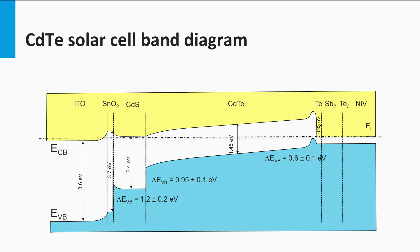Here we see the band diagram of a cadmium telluride solar cell. The P-type semiconductor cadmium telluride has a bandgap of 1.45 eV, whereas the N-type cadmium sulfide has a bandgap of 2.4 eV.